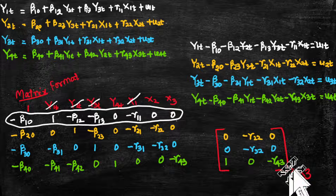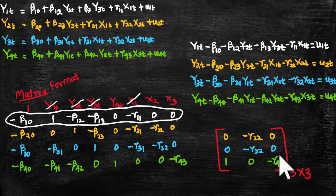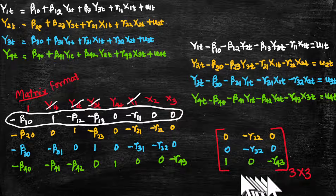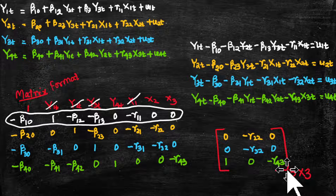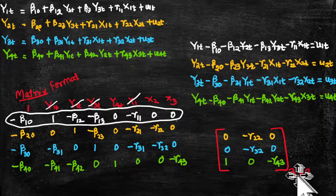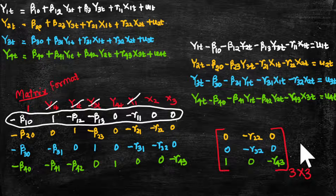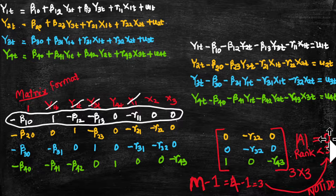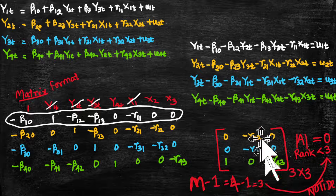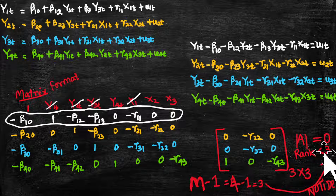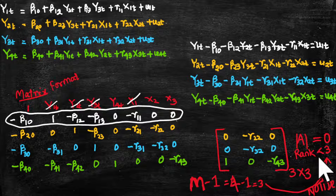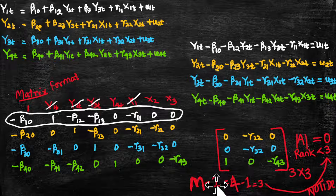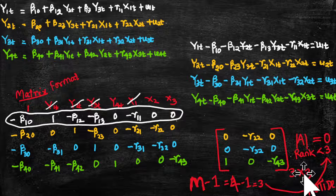We now have a three-by-three matrix and need to check its rank. If the determinant is not equal to zero the rank is three. However, the determinant of this matrix equals zero because it gets multiplied by zero. So the rank is less than three, but we needed the rank to equal m minus one, which is three. Therefore equation one is not identified as per the rank condition.